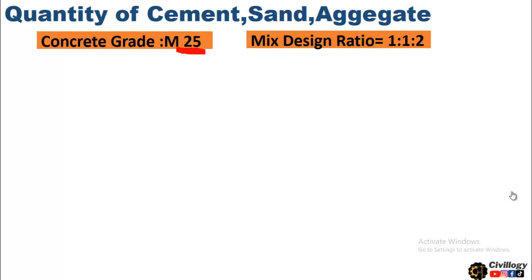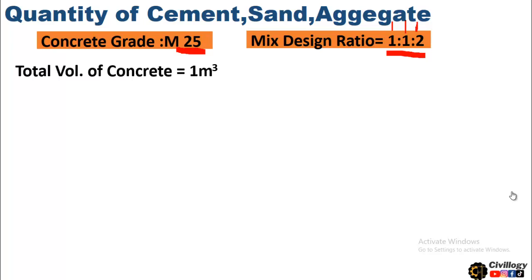The concrete grade is M25, that is 25 megapascal strength, and its mix design ratio is 1:1:2. This is a very rich concrete — the proportion is 1 for cement, 1 for sand, and 2 for coarse aggregate. Since cement and sand are equal, you can get an idea of how rich this concrete will be. The total volume of concrete we need to work with is 1 cubic meter, which is the wet volume.